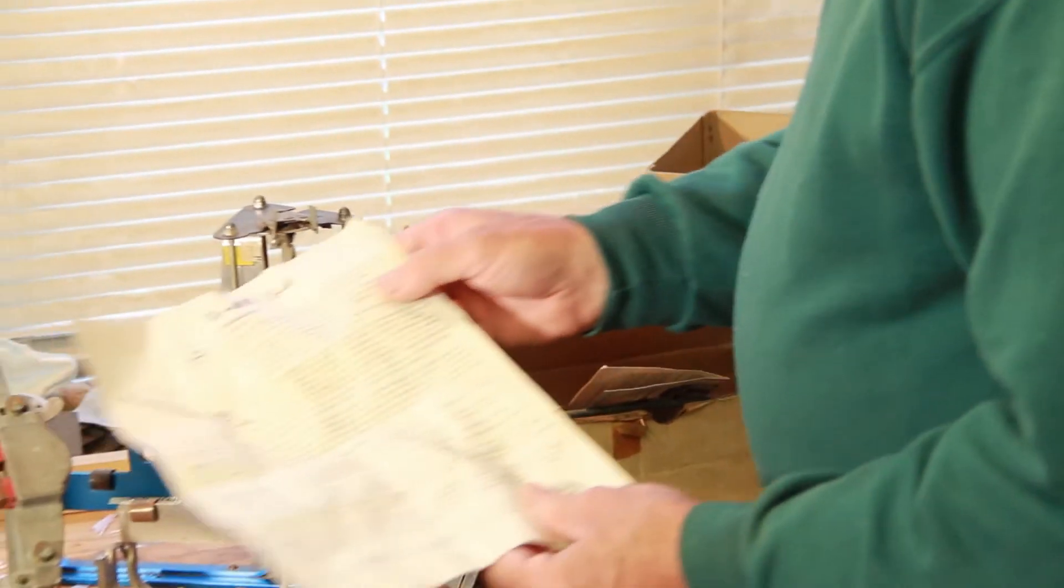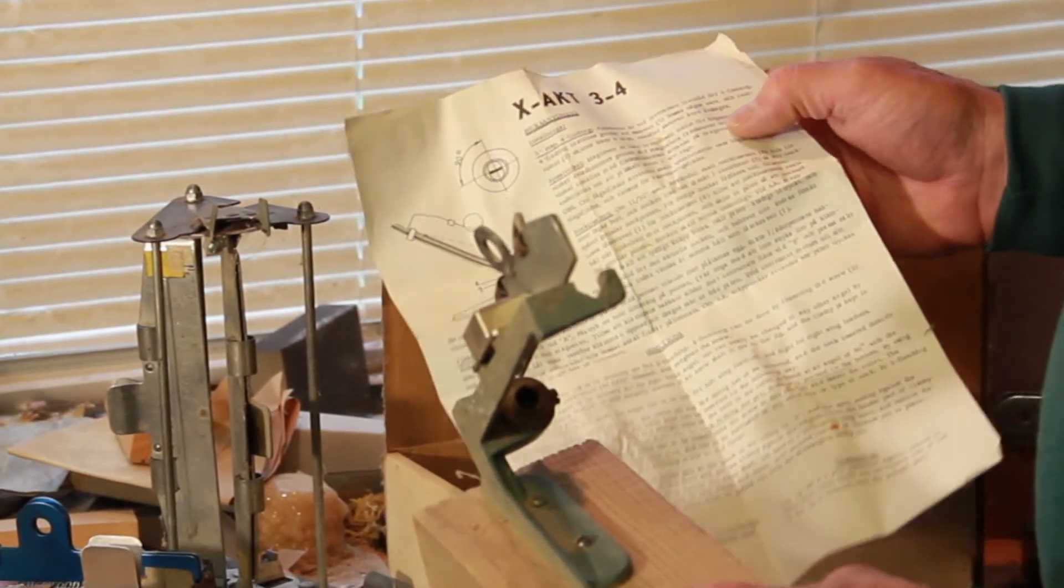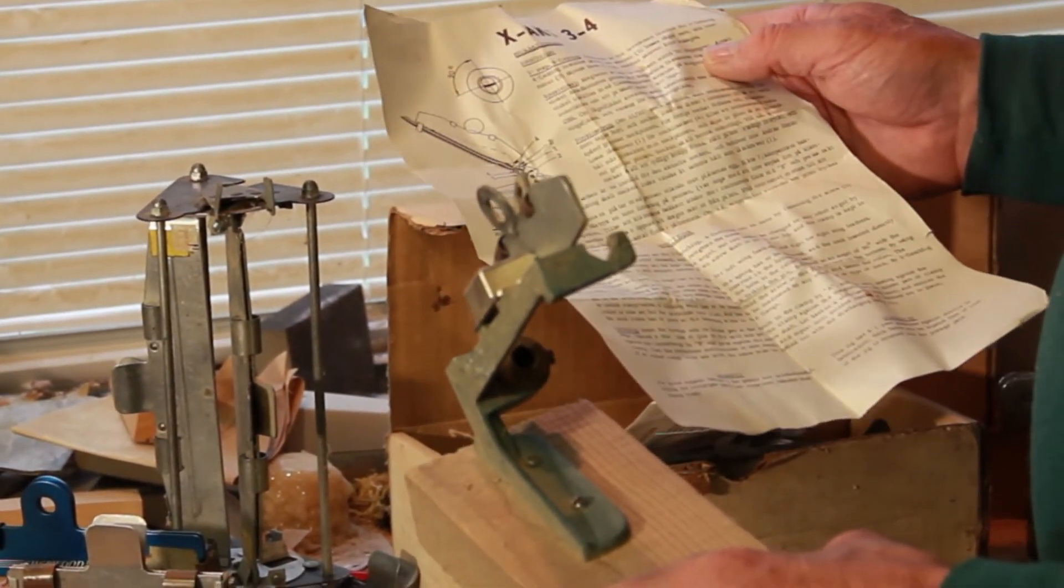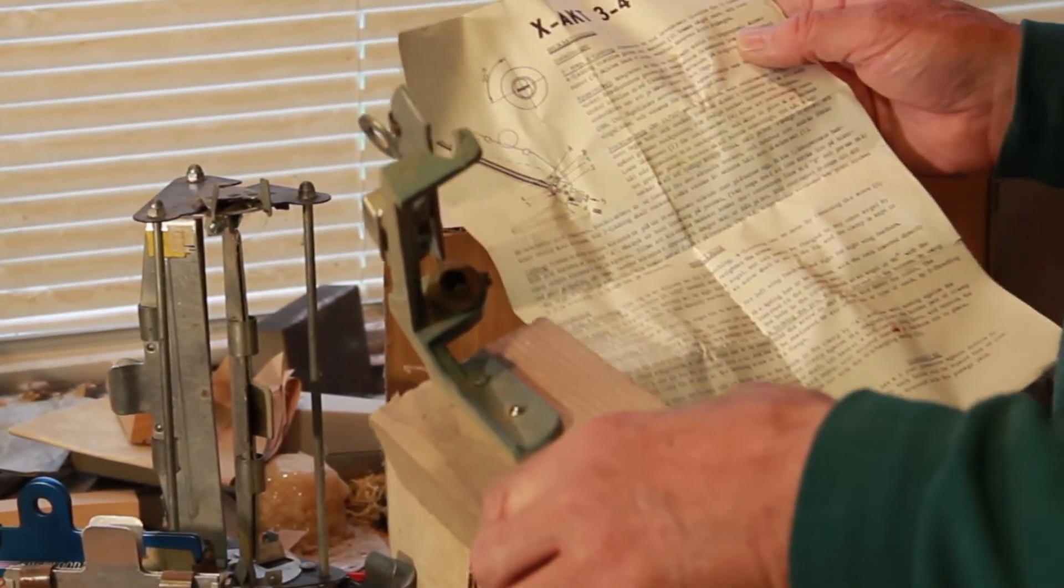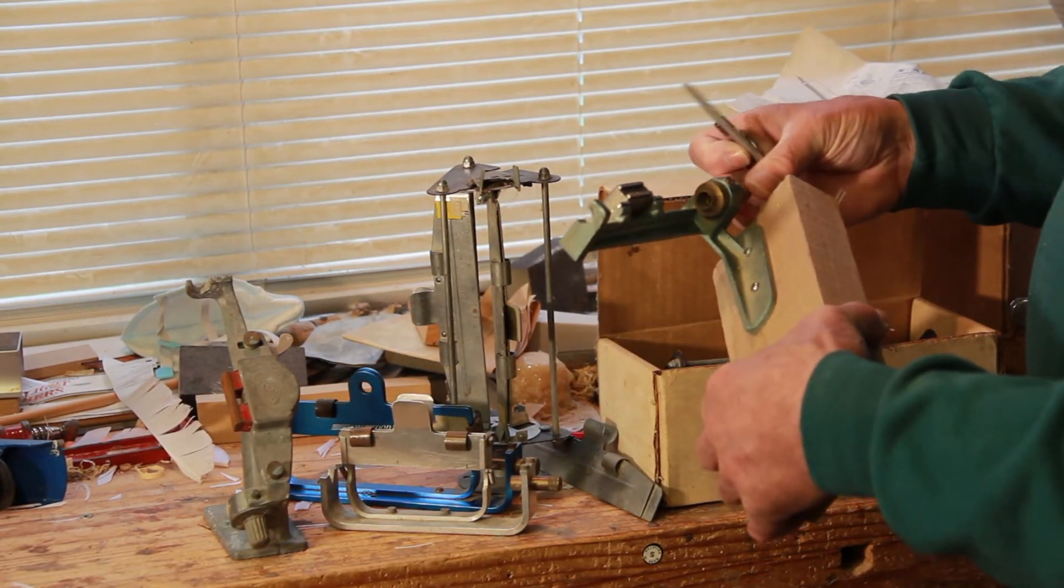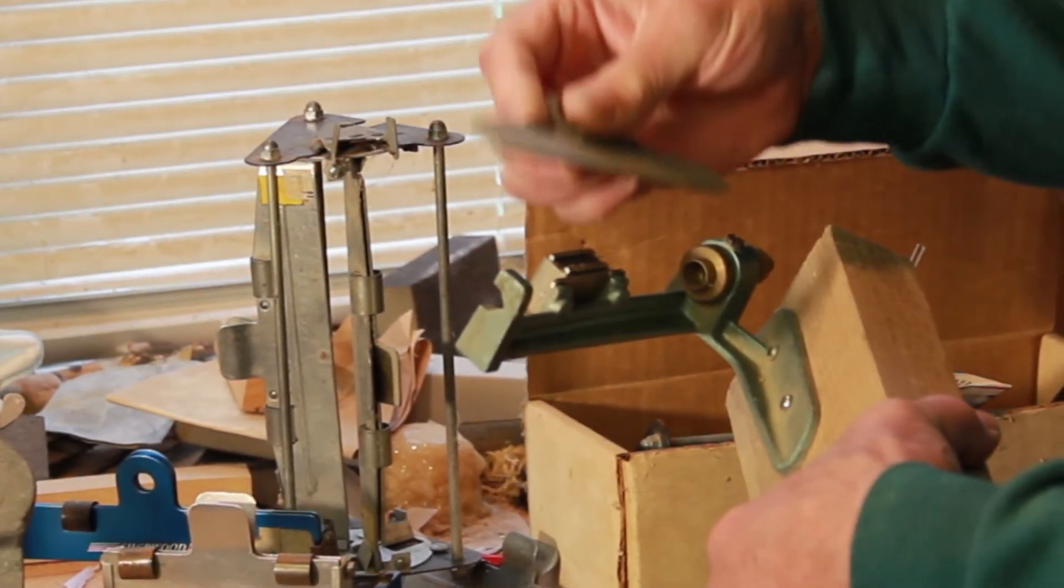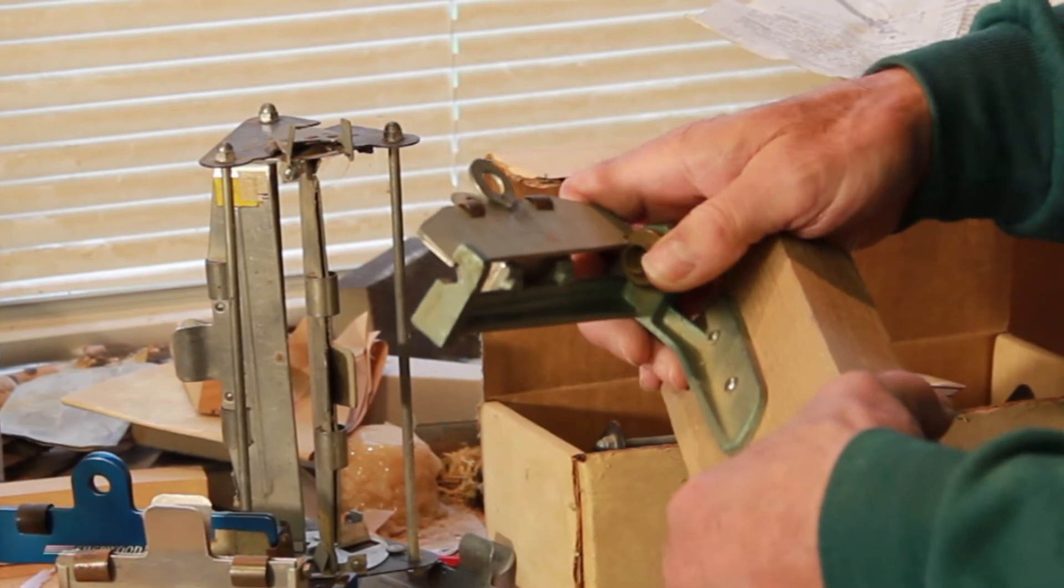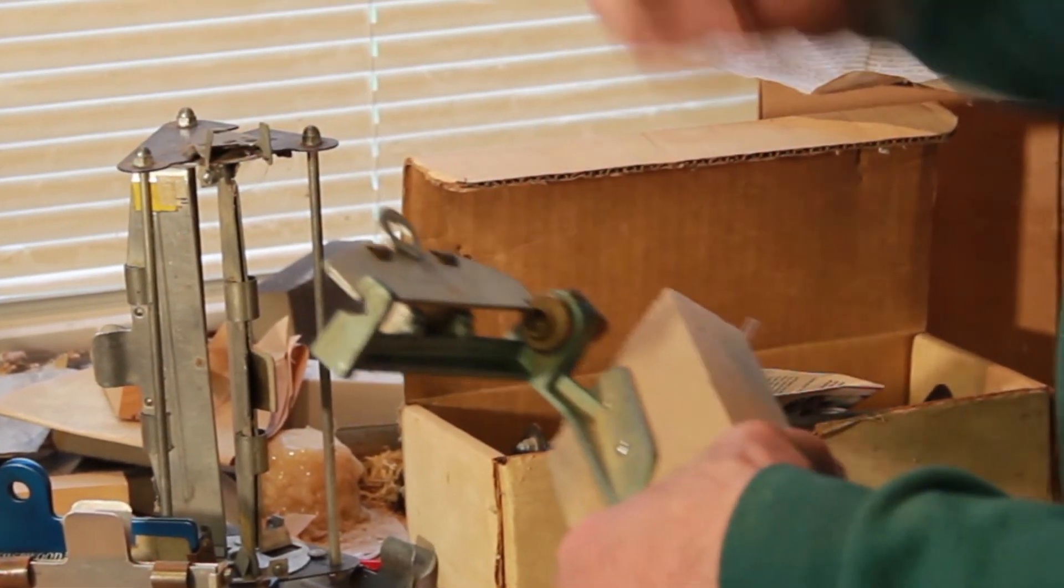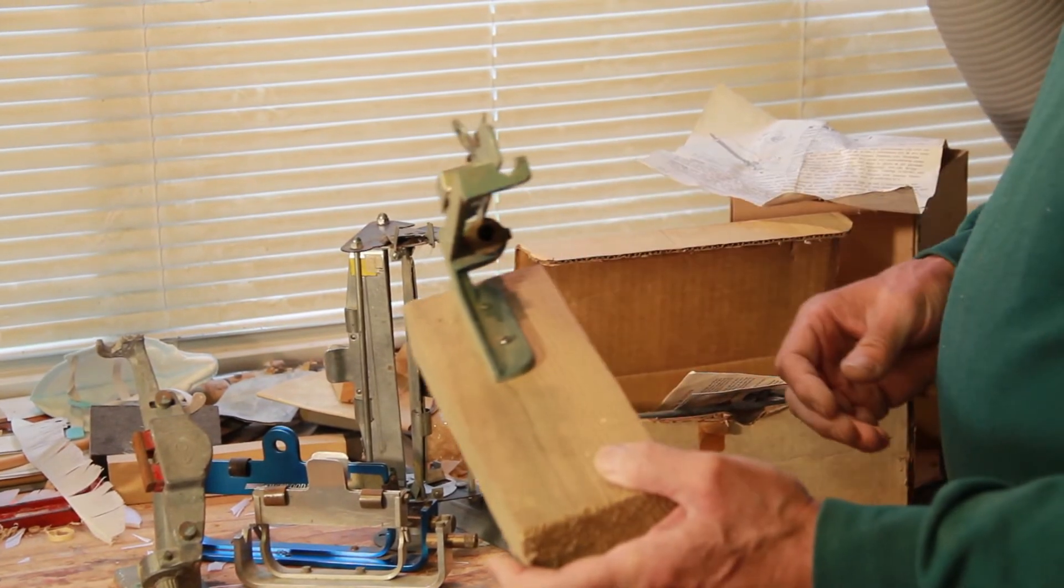The next one we've got, which is this one, is an Exact 3-4, so it will do three or four inch fletches. Again, a magnetic clamp, a very sturdy metal item. The feather goes in the clamp, fits on there with the magnet, arrow up through here. That's another very sturdy metal jig.